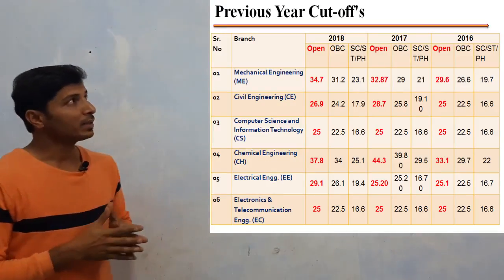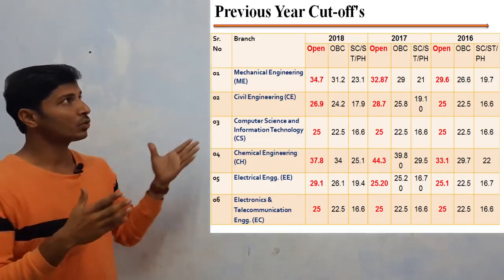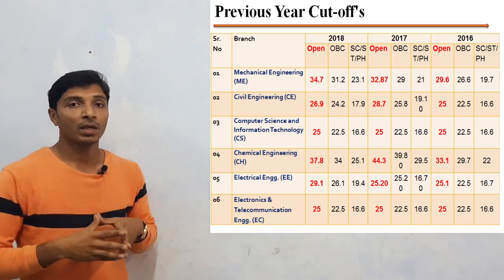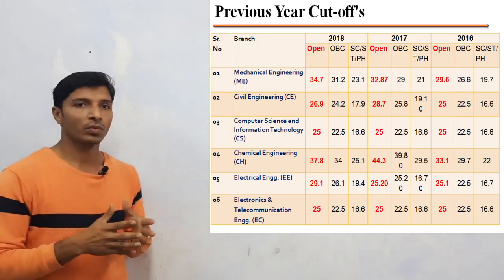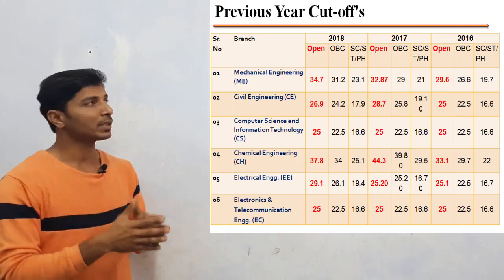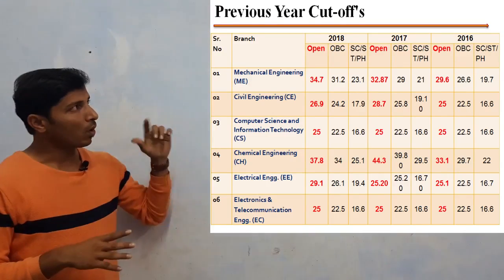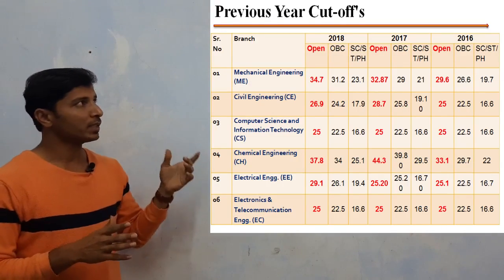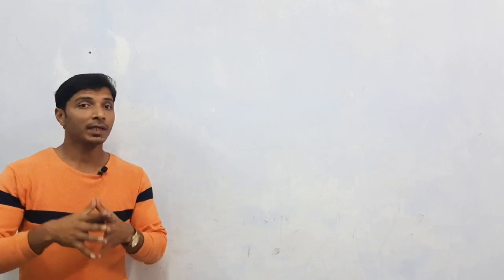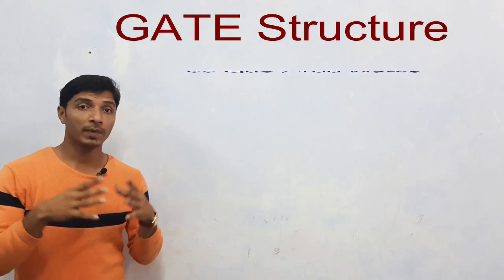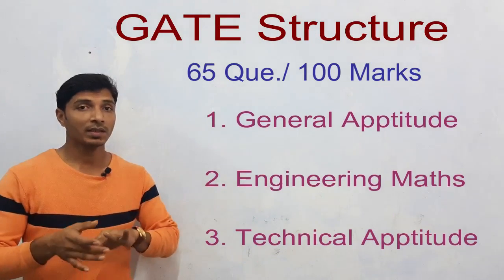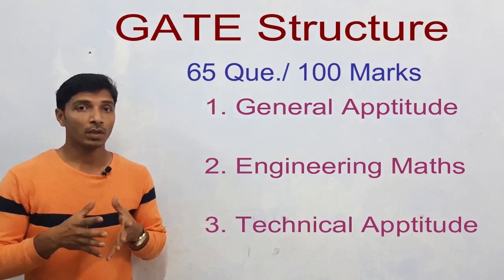The next part is previous years' analysis, showing the last 3 years' cut-off marks. For Mechanical Engineering and Chemical Engineering, the cut-off marks are a little higher compared to other branches. For all other branches, cut-off marks vary between 25 to 35. The basic GATE structure has 65 questions and 100 marks, with 3 sections: General Aptitude, Engineering Mathematics, and Technical Aptitude.